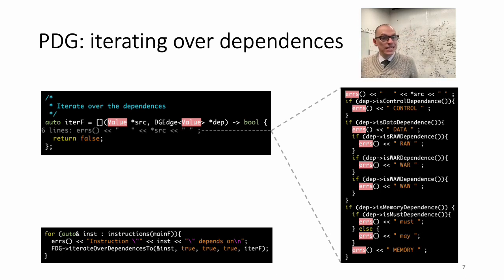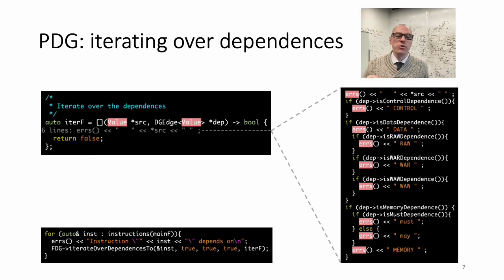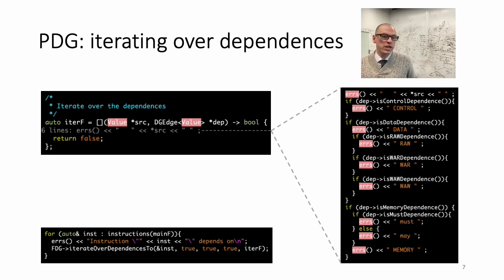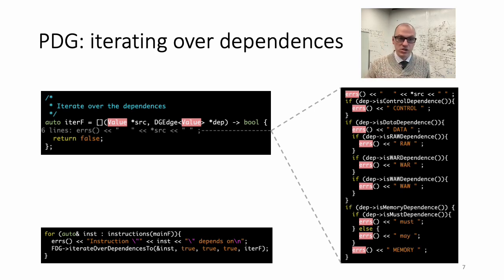If the dependence is a memory dependence — a dependence between two instructions because they might access the same memory location — you can also query the dependence to understand whether it is a may or must dependence. A must dependence means they must access the same location. A may dependence means we cannot prove they don't access the same location, so we conservatively assume they may. The strong information here is must dependence and the lack of dependence. This is very similar to alias analysis: a may alias is the lack of knowledge — you cannot prove the alias exists and cannot prove it doesn't exist. Similarly, this concept translates to dependence.